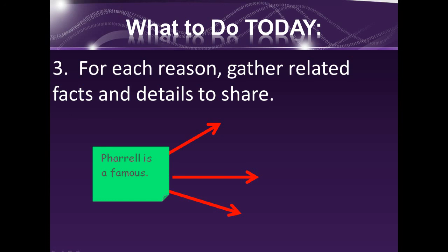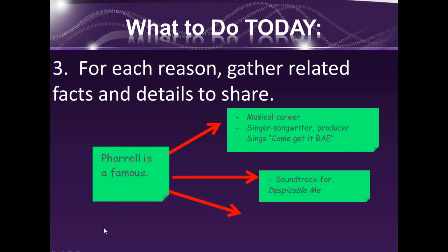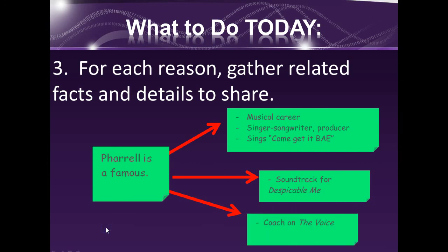Next, I want to think about each reason and ask: what facts and details can I share to give more information about this reason? One of my reasons was that Pharrell is famous. What details could I share to show that Pharrell is famous? He's had a long musical career from the Neptunes up to the present — he sings, he writes songs, he produces. He has Come Get It Bae out right now, the song Happy from the Despicable Me soundtrack, and he's currently a coach on The Voice. By doing more brainstorming, you're coming up with ideas to fill your paragraph so you're not asking yourself what to write or how to meet the 11-sentence minimum. Brainstorming will make your life so much easier.